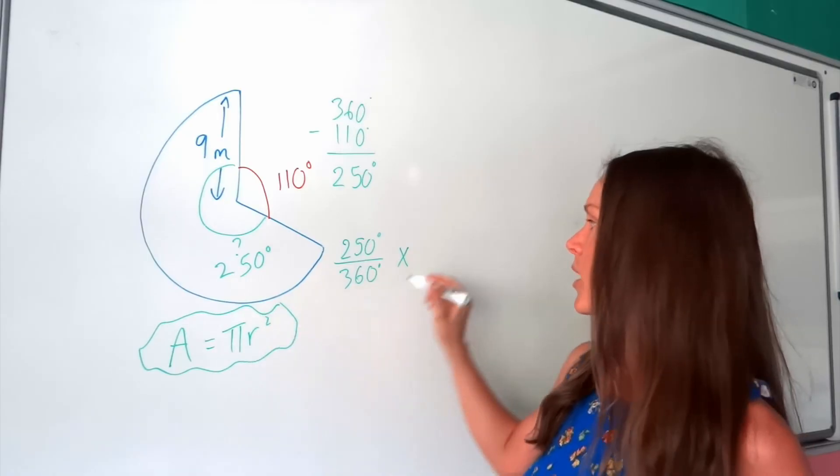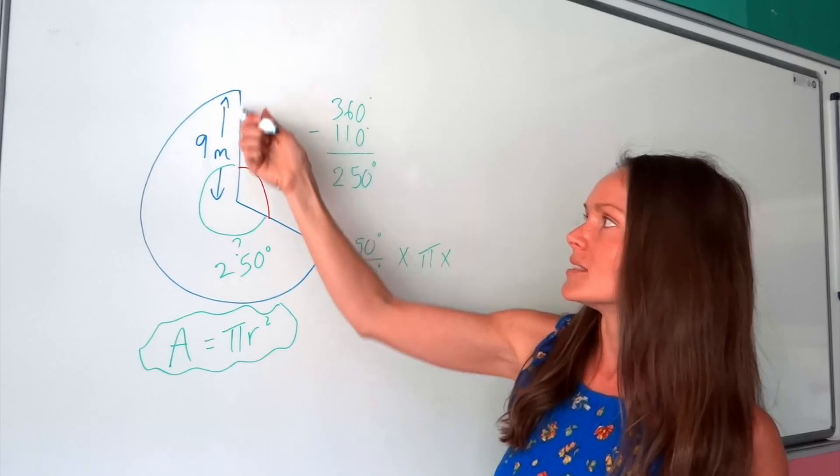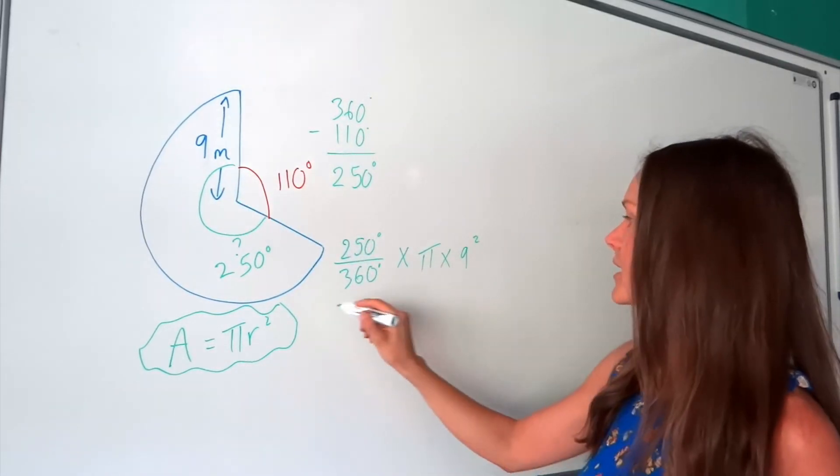So you're timesing by pi and timesing by the radius squared. Well, the radius in this question is given here. So we're going to multiply by 9 squared.